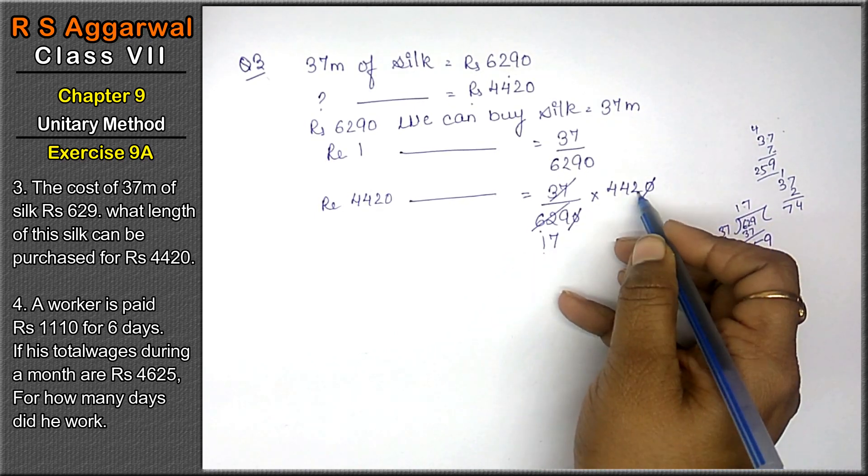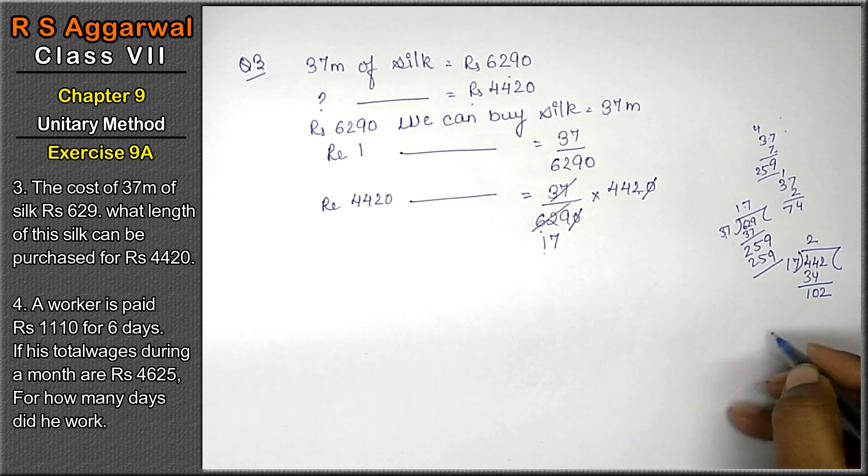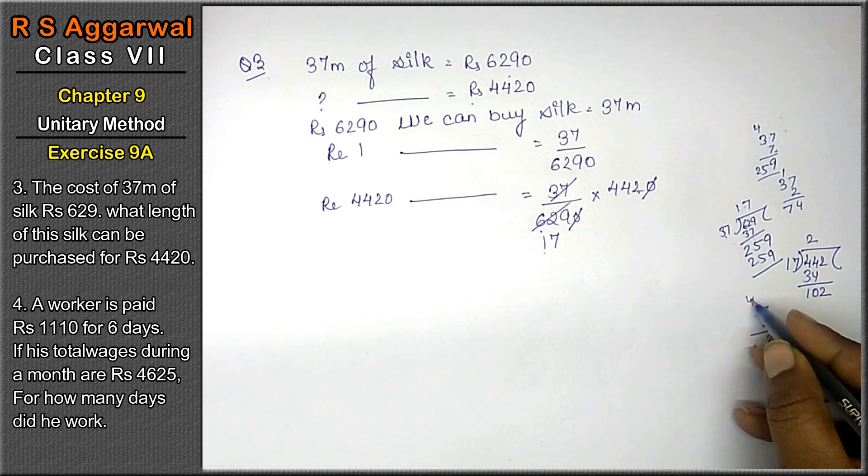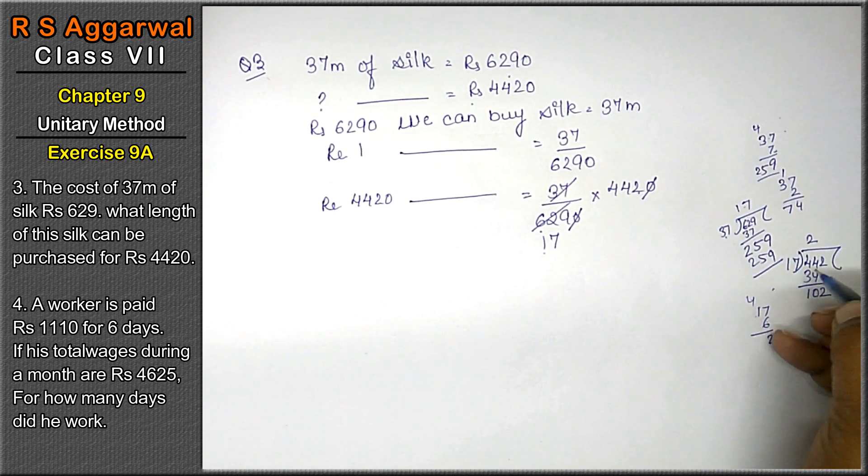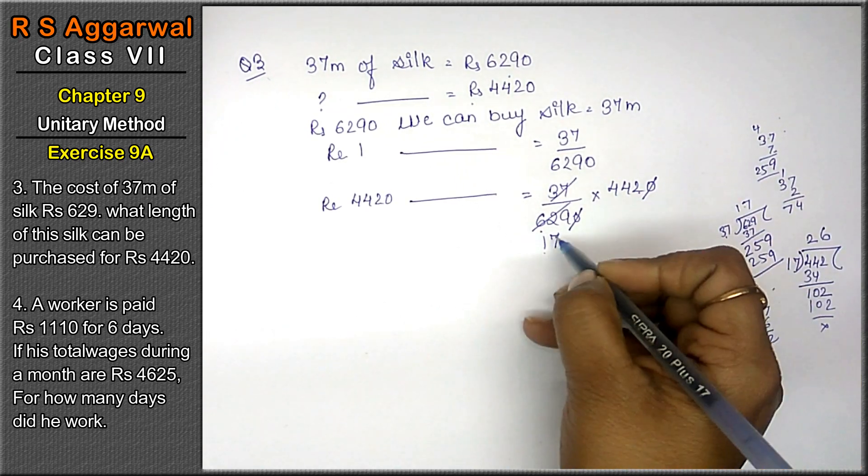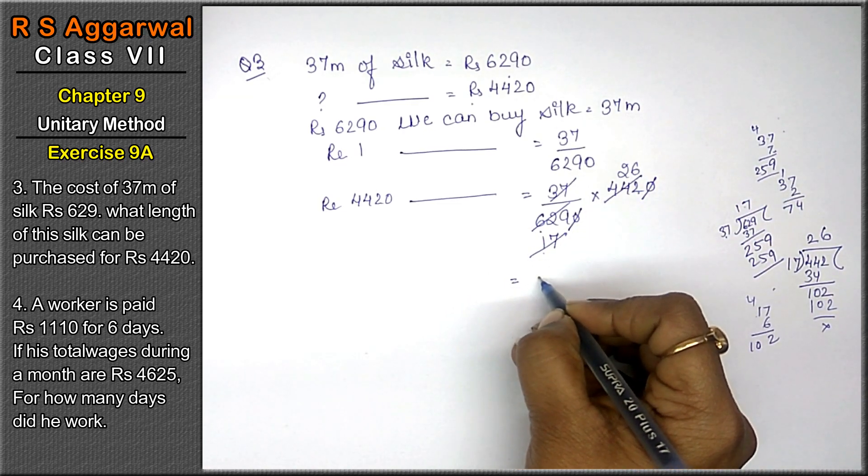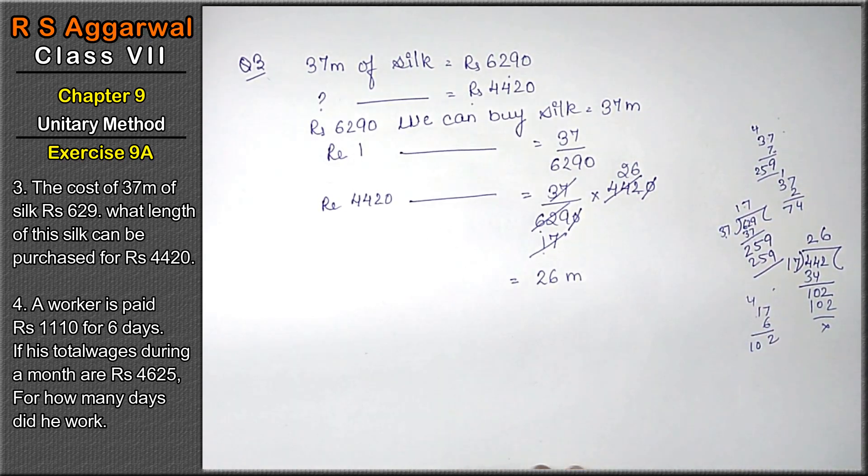Now let's see whether we can deduct it by this. Dividing 4420 by 17. After the calculations, the answer is 26 meter.